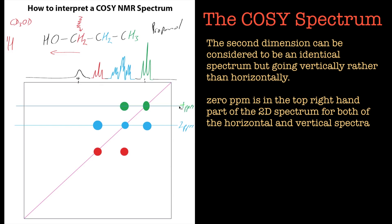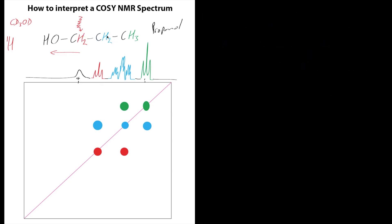If you looked at the individual slices at each line, you'd see the triplet and the other splitting patterns. That's a good way of looking at COSY spectra — think of them as 1D spectra all stacked next to each other. If we take the lines out now you can see this square pattern: if you irradiate this one it shows that one up, and if you irradiate that one it shows this one up. The symmetry exists because those protons are connected to each other. The proton in the middle is connected to both neighbors, so you'll see signals on both sides.